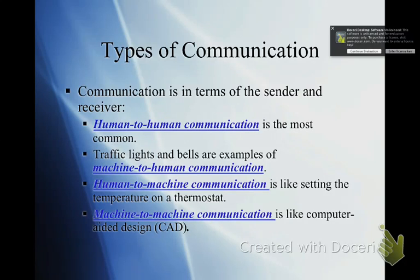Now there are four types of goals, or types of communications — the way we communicate. These are easy to remember. There are two things involved: people and machines. And we can go back and forth — people to people, people to machine, machine to people, and machine to machine. This is just a way to understand how things are communicating.